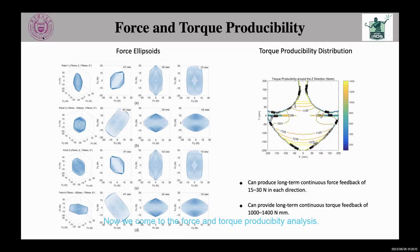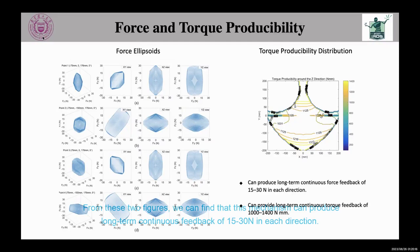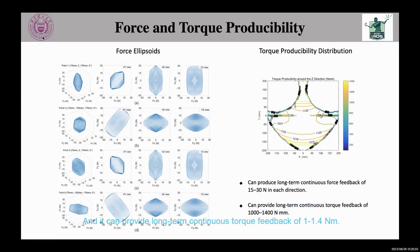Now we come to the force and torque producibility analysis. From these figures, you can find that this mechanism can produce long-term continuous force feedback of 15 to 30 newtons in each direction, and it can provide long-term continuous torque feedback of 1 to 1.4 newton meters.